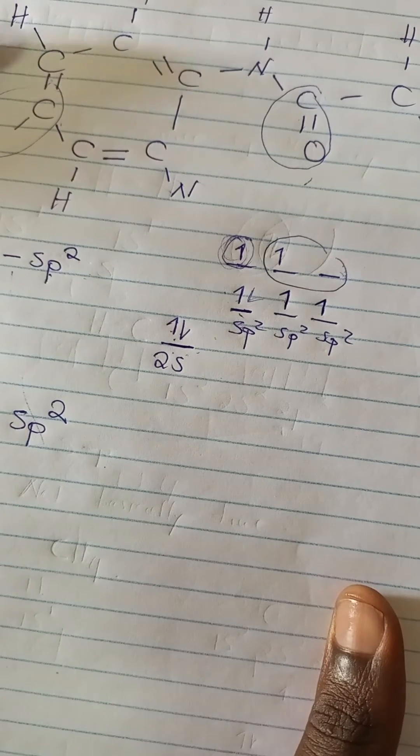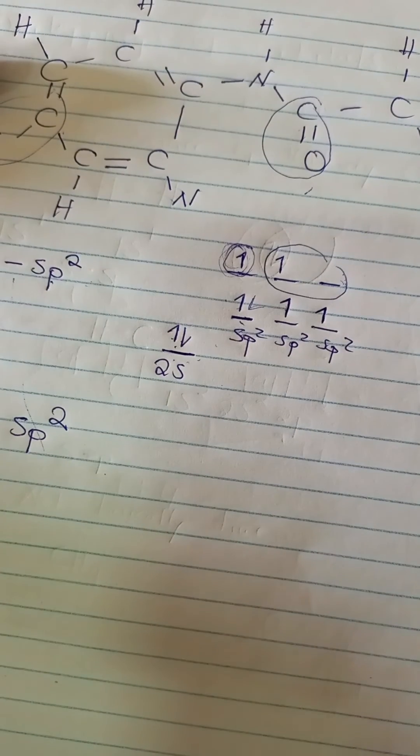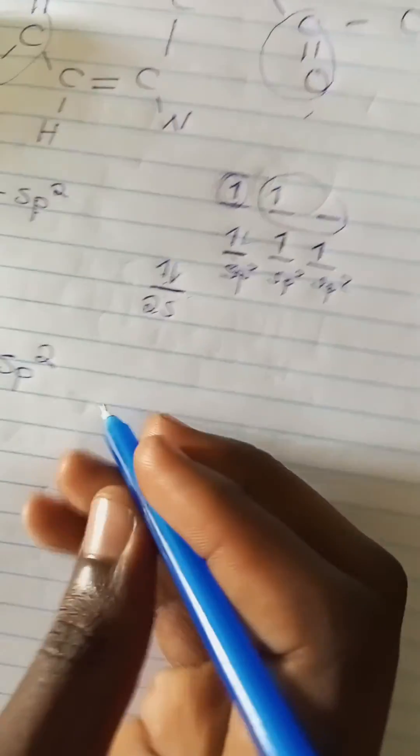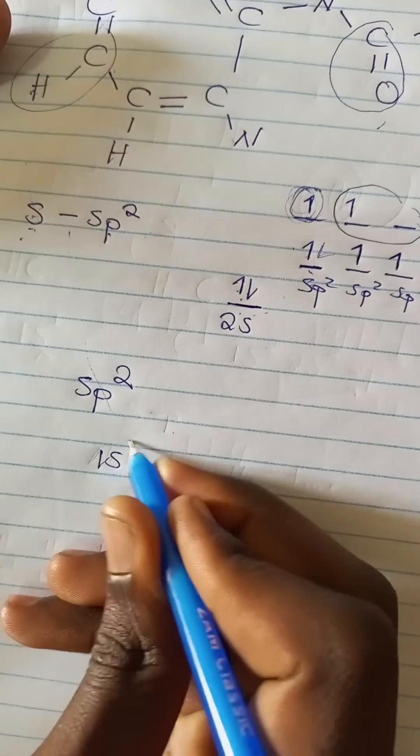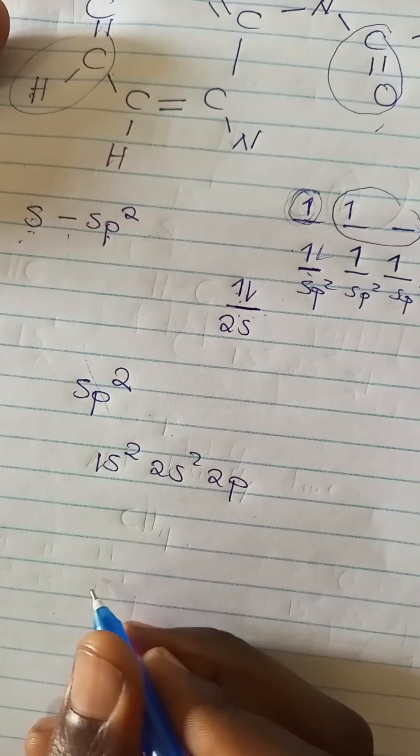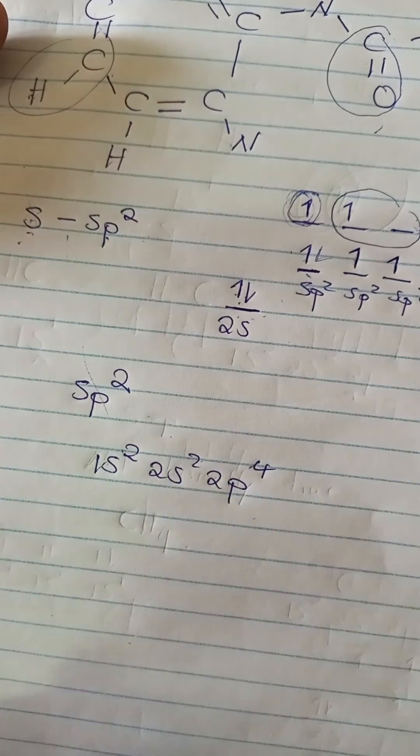But when you look at the oxygen there, it's unpredictable. We can't say it's s - that can be deceiving. Because are we sure, are we so certain that it's actually the s orbital that is going to take part in the overlap? So when you show the electron configuration of the oxygen, it will be 1s² 2s² 2p⁴ - yes, something like that.